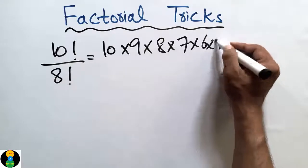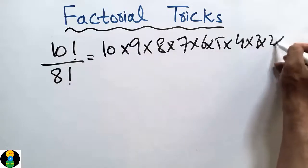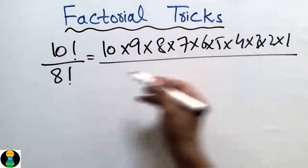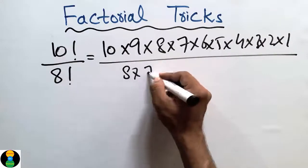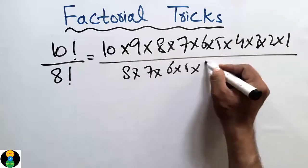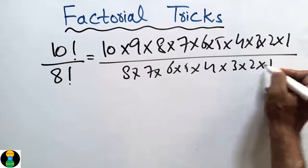So this is 10!/8!. 8 factorial is 8 into 7 into 6 into 5 into 4 into 3 into 2 into 1. By solving these calculations we will get our required answer.